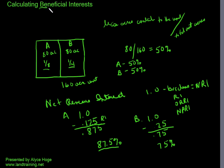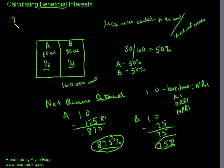So that's what beneficial interest does. Instead of just taking lease acres contributed to the unit divided by the total, we're going to take into consideration that Owner A has the benefit of a better royalty rate. So Owner A is going to be rewarded for having a better royalty rate, and Owner B is going to be penalized for having a higher royalty rate. To calculate beneficial interest, we're going to use this net revenue interest and create something called net revenue acres, and using that we can determine what the beneficial interest is.